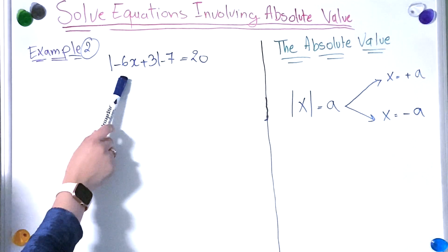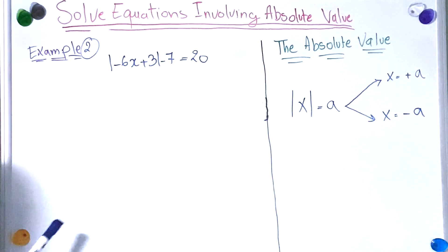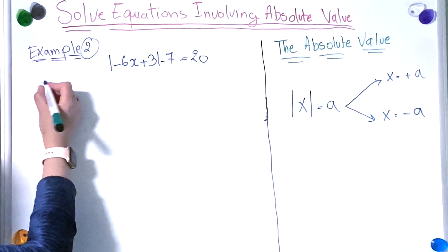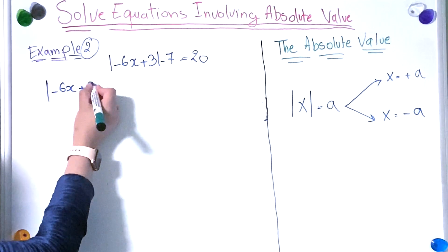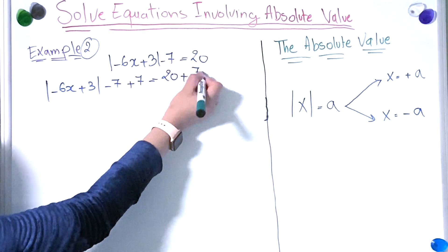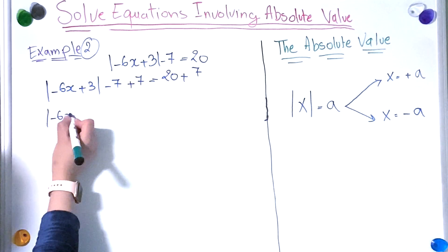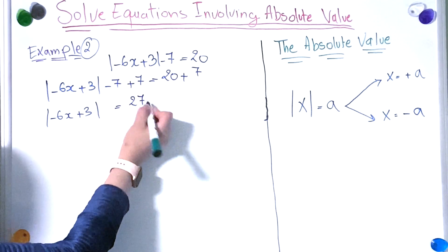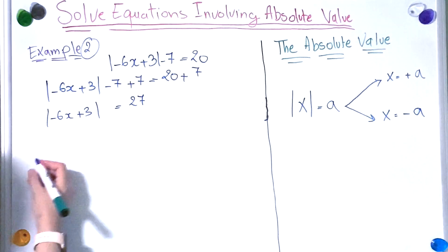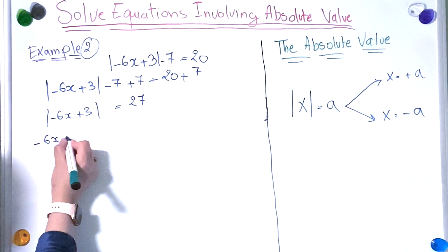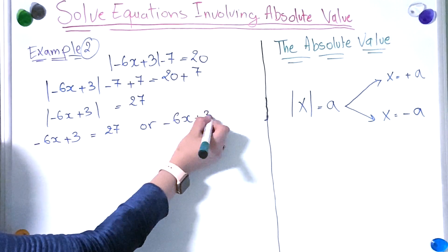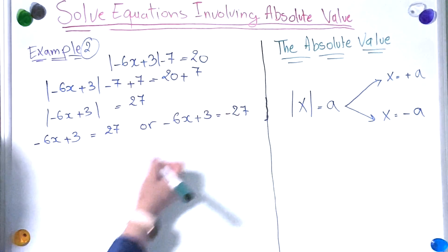Next example: we have the absolute value of minus 6x plus 3, minus 7, equal to 20. First step, we're going to add 7 to both sides. So the absolute value of minus 6x plus 3 minus 7 plus 7 equals 20 plus 7, giving us the absolute value of minus 6x plus 3 equal to 27. Now this equals either 27 or minus 27.